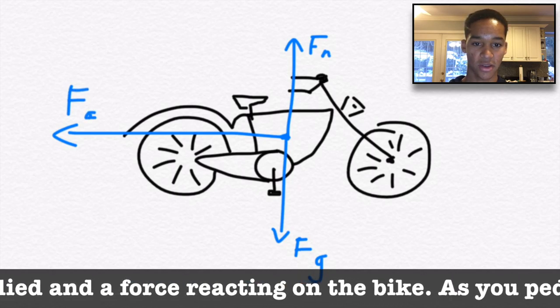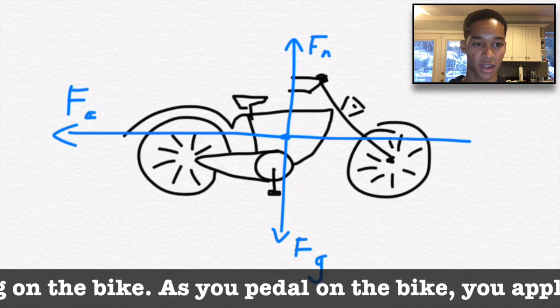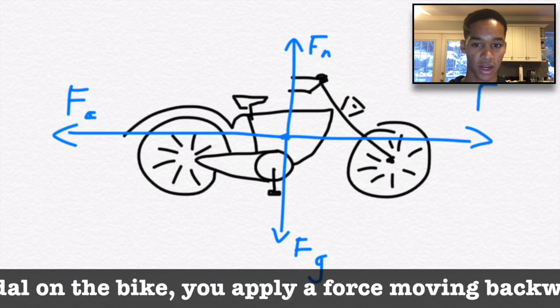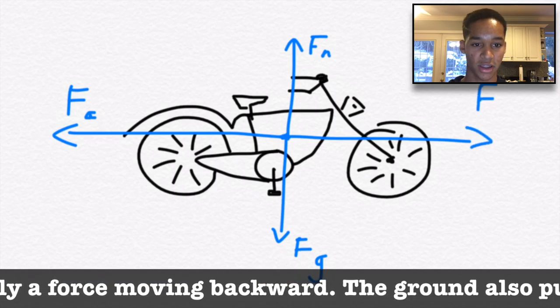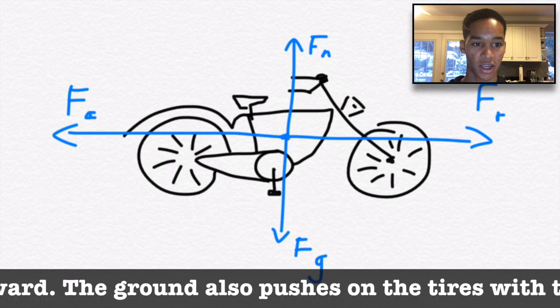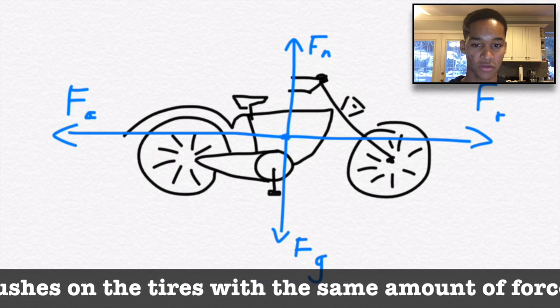As you pedal the bike, you apply a force moving backward. The ground also pushes on the tires with the same amount of force in the opposite direction, forward. This is a pair of action-reaction forces.